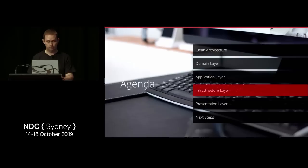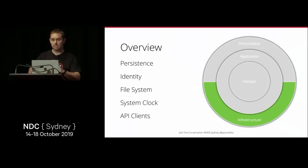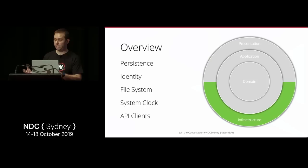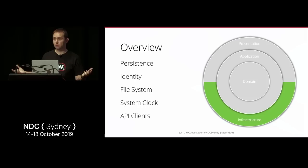The infrastructure layer contains persistence, identity (using ASP.NET Core Identity), file system concerns, the system clock, and API clients — essentially anything external. I've used one project here, but for complex infrastructure you could split it, for example calling it Infrastructure.Identity. For most solutions, one project separated by folders is sufficient.